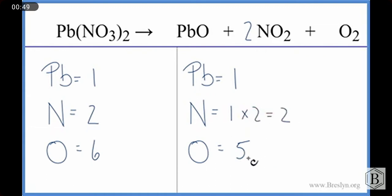We need to recalculate these oxygens, though. We have the one plus two times two is four, plus two. So that gives us seven oxygens.